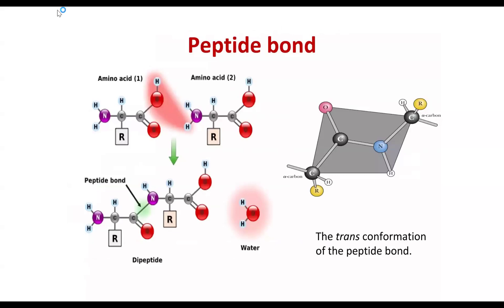Looking closely at the peptide bond: this is one amino acid and this is another amino acid — we have two amino acids. The carboxyl group of one amino acid and the amino group of another amino acid are now linked together. This linkage is what we call the peptide bond, and sometimes we also call it an amide bond.